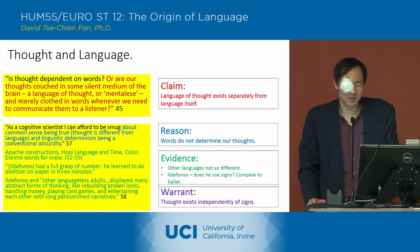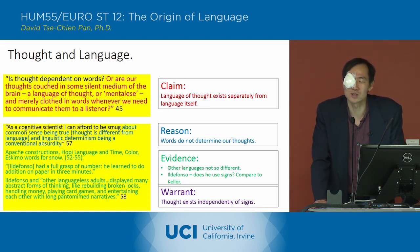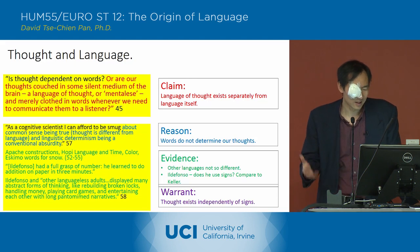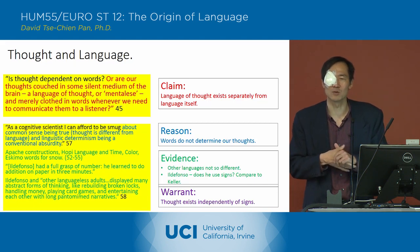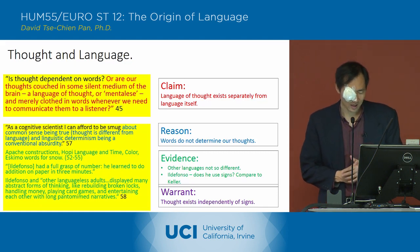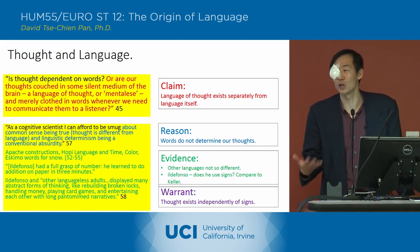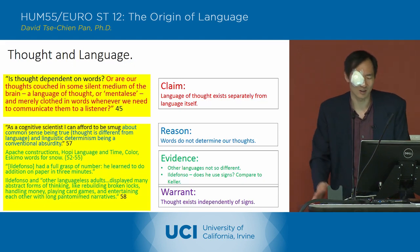Some of the evidence he provides is an attempt to refute the alternative thesis that language itself determines thought — the Sapir-Whorf hypothesis. That hypothesis says the structures of language determine our thoughts. There are ideas like the Hopi language not having proper senses of time and color. But looking more closely at the Hopi language, he finds they do have very clear conceptions of time that are also expressed in their language.